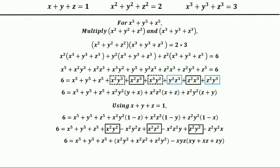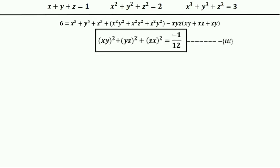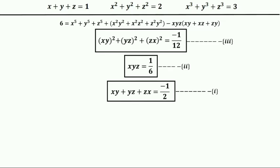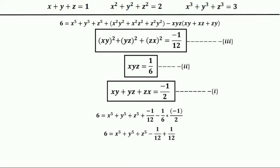For this equation we use equation three, equation two, and equation one. After putting in the values we get 6 equals x⁵+y⁵+z⁵ minus 1/12 plus 1/12. After cancelling, we get x⁵+y⁵+z⁵ is exactly equal to 6. And that is our correct answer to the fifth power.